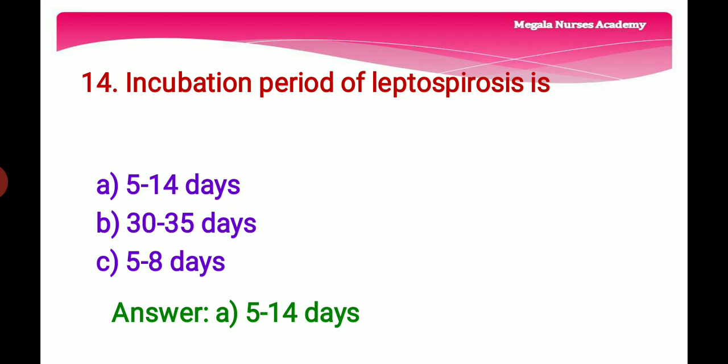Fourteenth question: The incubation period of leptospirosis. Incubation period is the time interval between entry of the microorganism and appearance of first signs/symptoms of disease. Option A: 5 to 14 days, Option B: 30 to 35 days, Option C: 5 to 8 days. The right answer is Option A, 5 to 14 days.